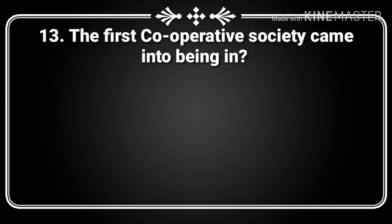13th question. The first cooperative society came into being in? Answer: 1760.